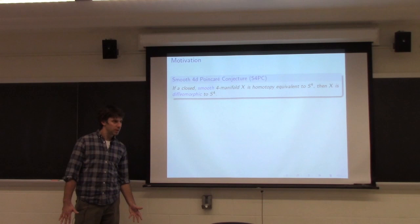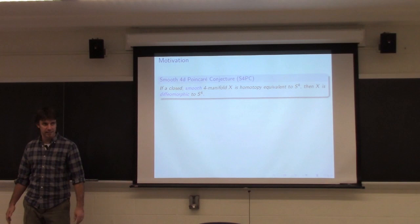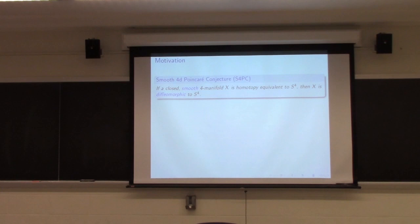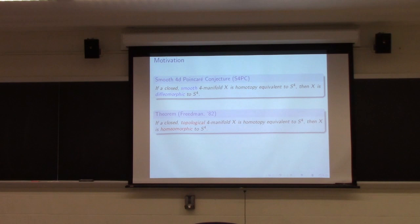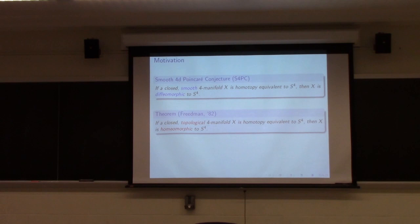I want to talk about some joint work with Jeff Meyer about a special case of the four-dimensional Poincaré conjecture. The big question is the S4PC — the smooth four-dimensional Poincaré conjecture. Namely, if you hand me a smooth four-manifold and tell me that it's homotopy equivalent to the standard four-sphere, is it in fact diffeomorphic to the standard smooth four-sphere?